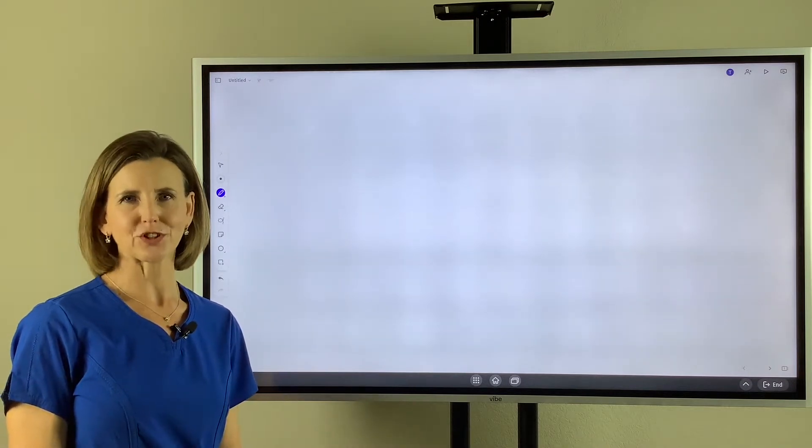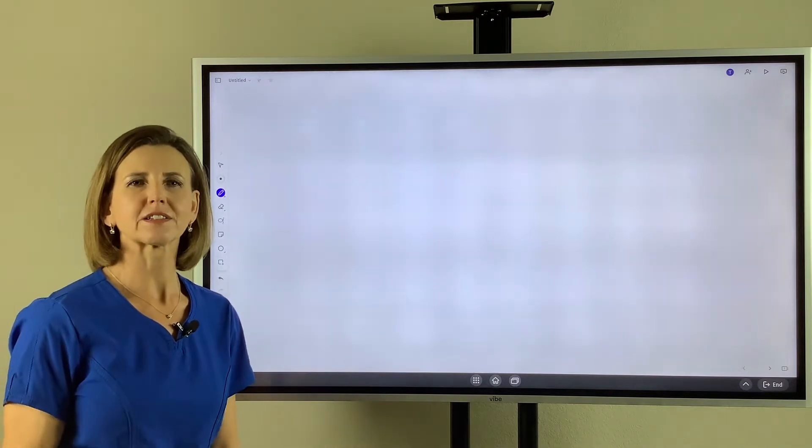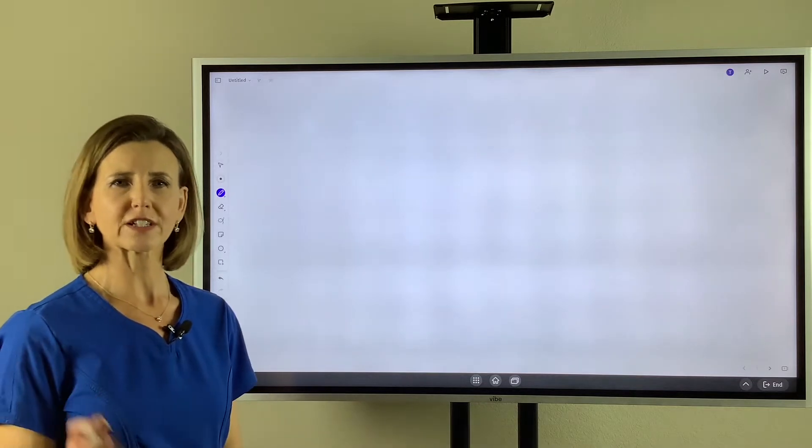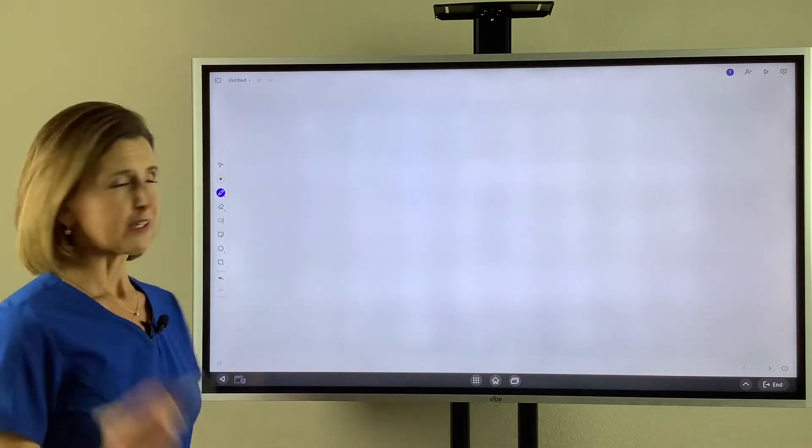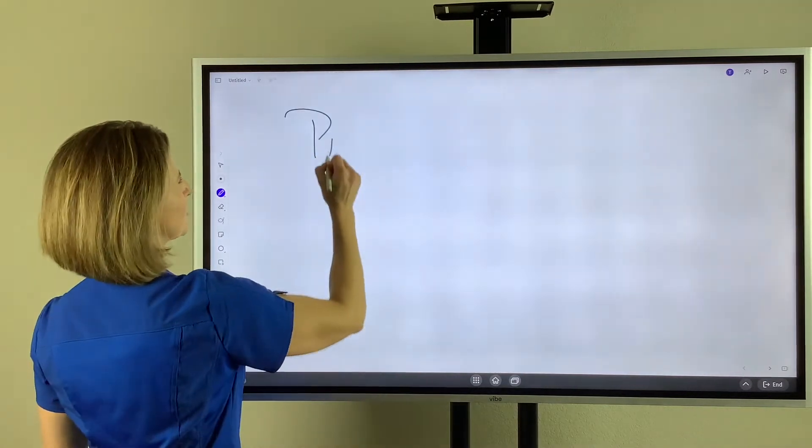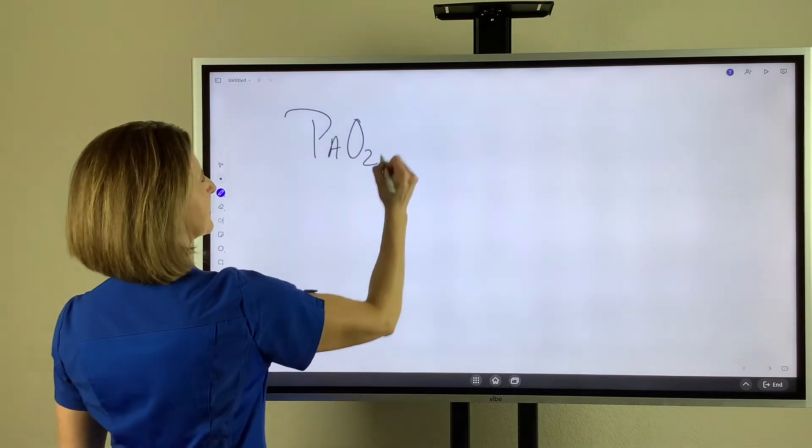Hello, welcome to Respiratory HQ. Today I want to talk to you about the alveolar to arterial oxygen gradient. If you see it on a test, it may be written like this.